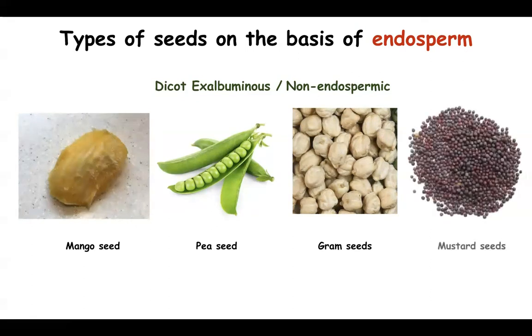Mustard seeds, which are used very frequently for cooking purposes, are also an example of dicot exalbuminous or non-endospermic seeds.